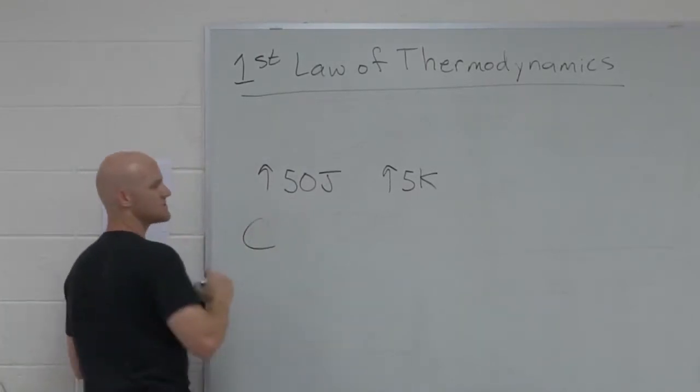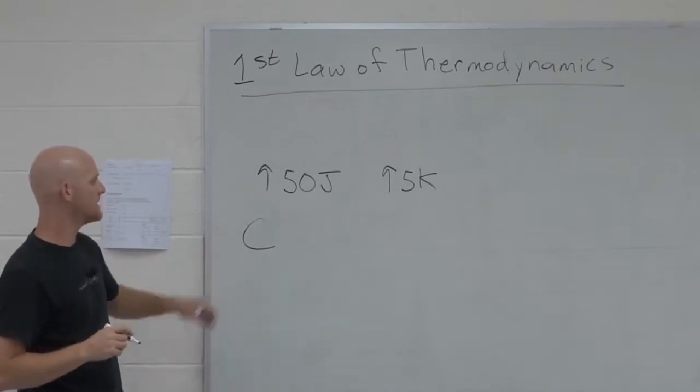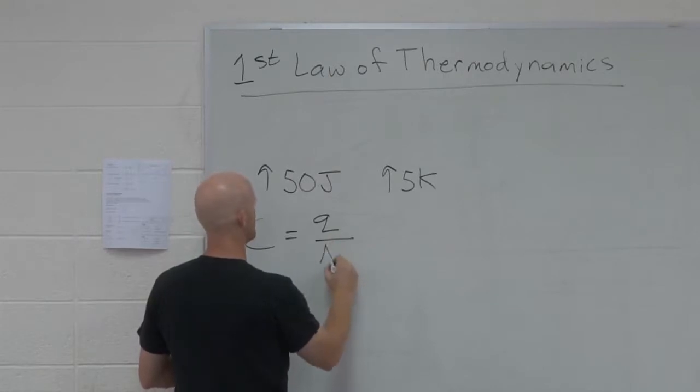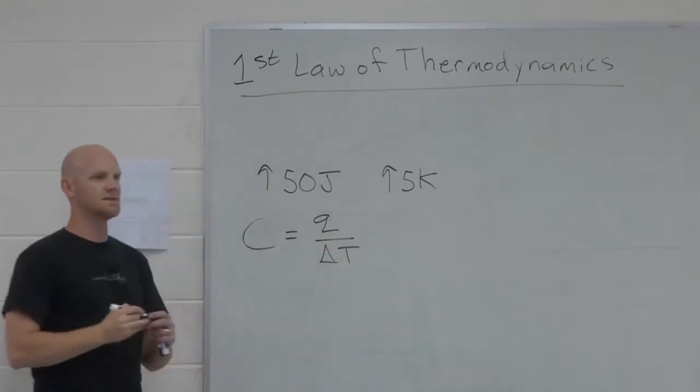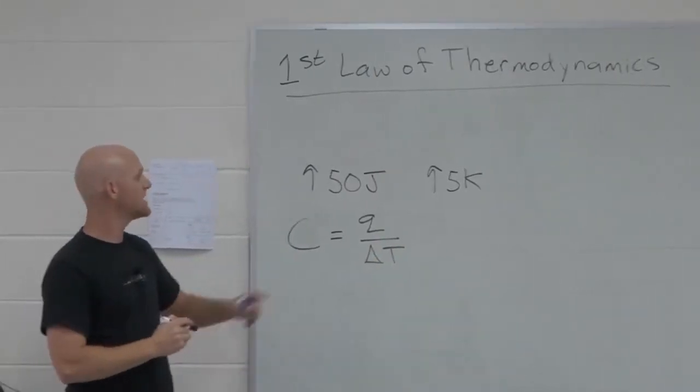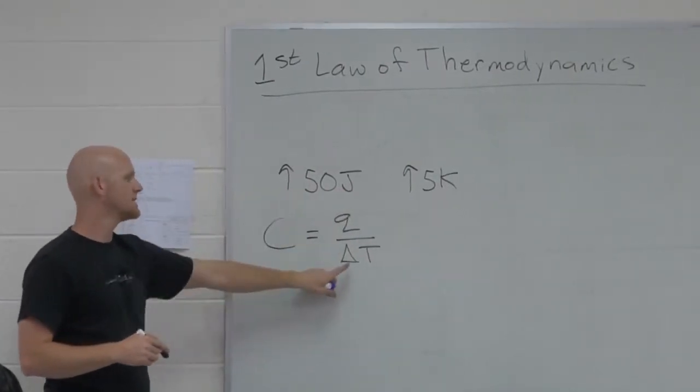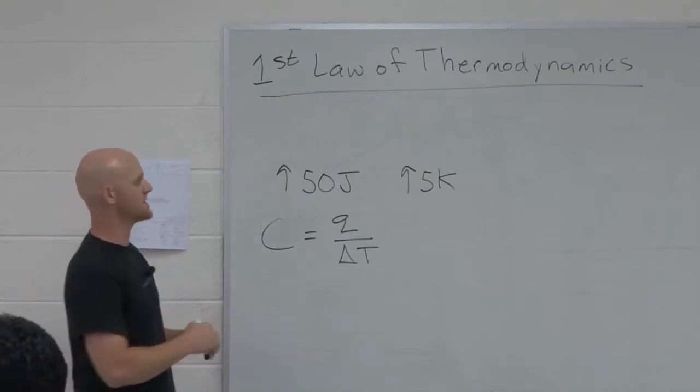So heat capacity, usually given the term, the variable C, or the symbol C, is defined as Q over delta T. It's the amount of heat needed to either be put into or pulled out of a system to get a certain temperature change, per temperature change.